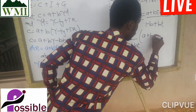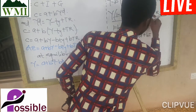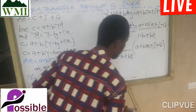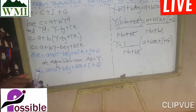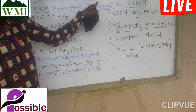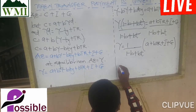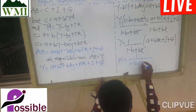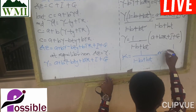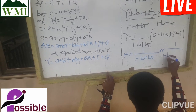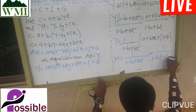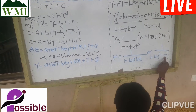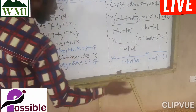So Y equals 1 over (1 minus B plus BT) times (A plus BTR plus investment plus government spending). The general multiplier when transfer payment is included under proportionate tax is equal to 1 over (1 minus B plus BT), which is the same as 1 over (1 minus B times (1 minus T)).